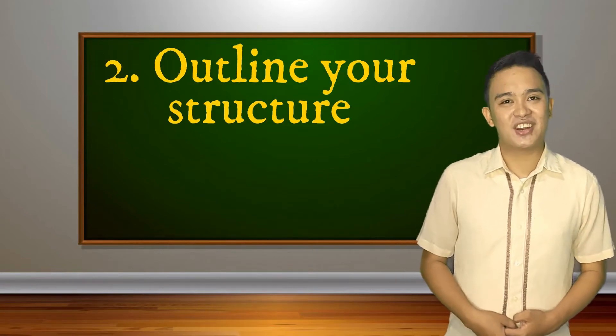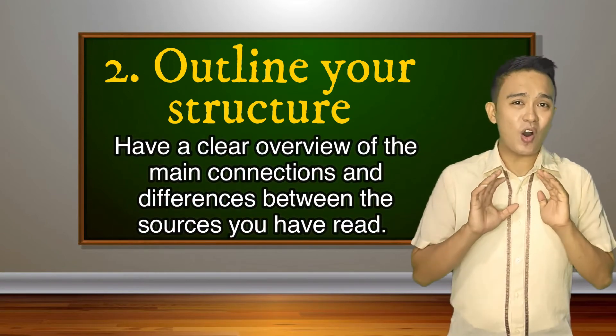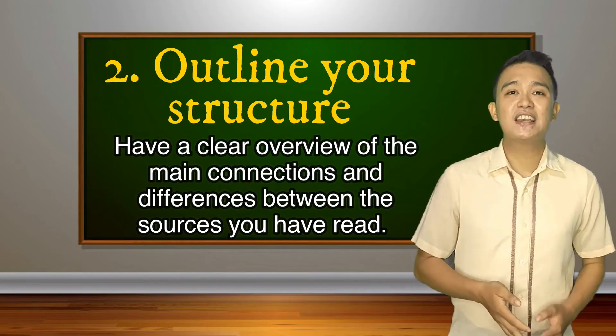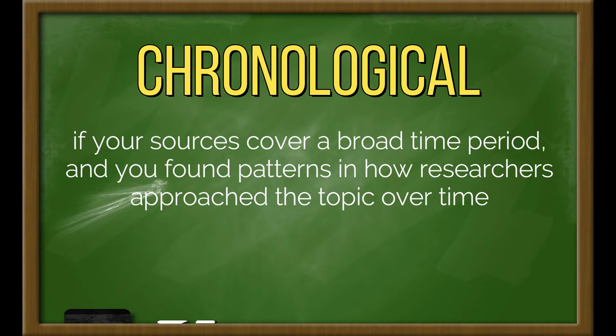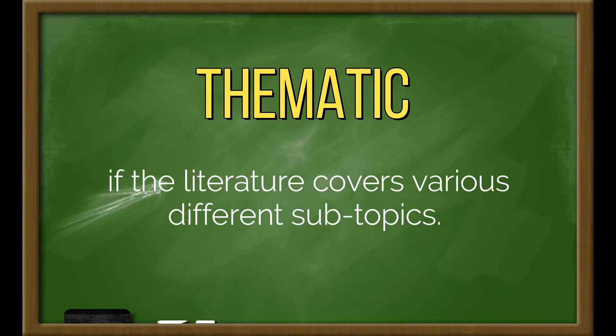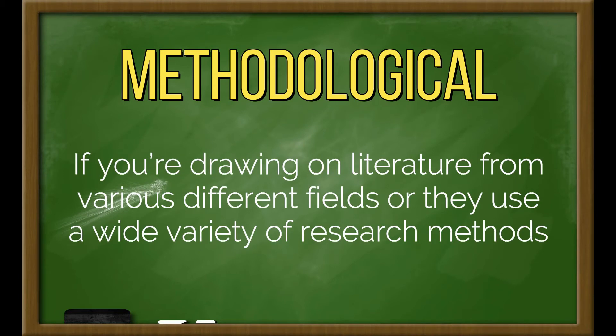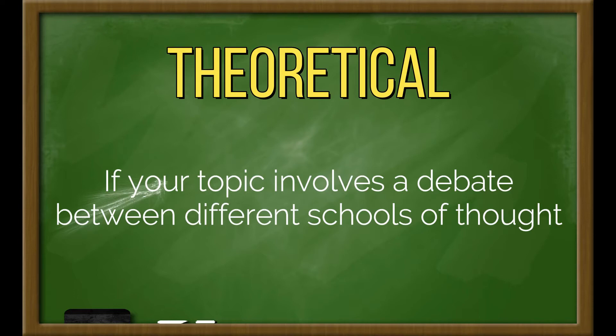Second, outlining your structure. After organizing your sources, you should have a clear overview of the main connections and differences between the sources you have read. You need to decide how to group them together and the order in which you'll discuss them. You can structure your synthesis chronologically — if your sources cover a broad time period and you found patterns in how researchers approach the topic over time. It can also be thematically — if the literature covers various different subtopics. If drawing on literature from various fields or wide variety of research methods, you can organize sources methodologically. And lastly, if your topic involves a debate between different schools of thought, you can organize it theoretically.